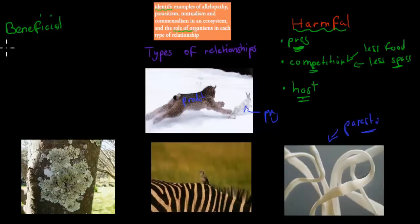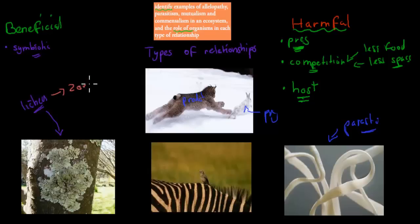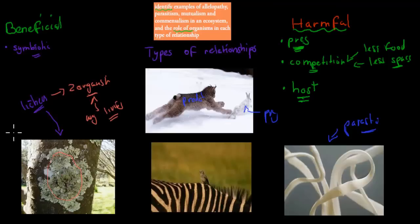Now beneficial relationships — many of your symbiotic relationships where both members benefit. An example is lichen, which is actually a combination of two organisms — two different living things. An organism is just any living thing: bacteria, a plant, an animal. With lichen, if the two organisms are not together they would actually die. So they need to be together to survive — they're in a beneficial relationship because they rely on each other.